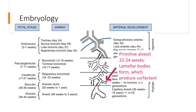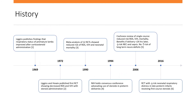After that point we get into the saccular phase, when the alveolar ducts are developing and maturing, and then the alveolar phase — roughly from 36 weeks to term. Alveolar development actually continues for about 18 months after babies are born. That's it for embryology — just keep that in the back of your mind as we talk a little bit about the history of where steroids came from and how this was all developed.